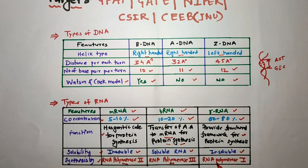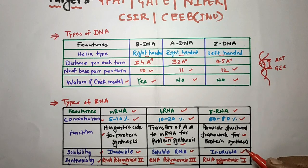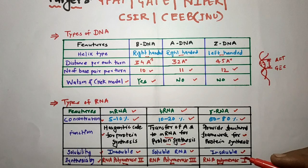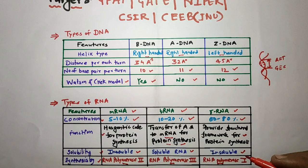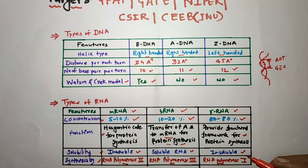These different types of DNA and RNA are very important from the GPAT and NIPER exam point of view. For today that is sufficient. In the next lecture we will discuss recombinant DNA technology. Thank you for watching.